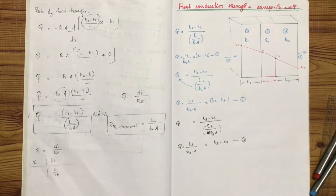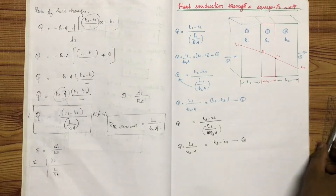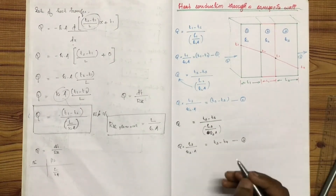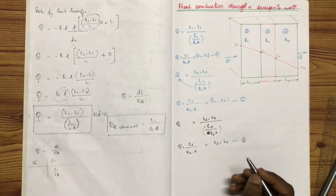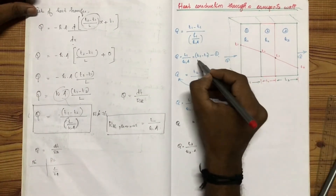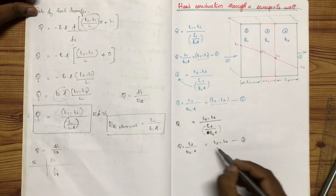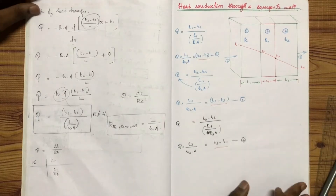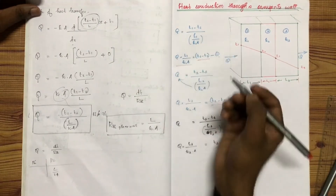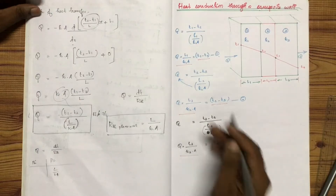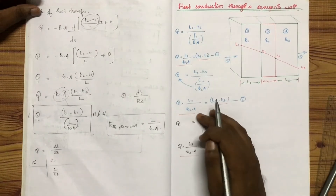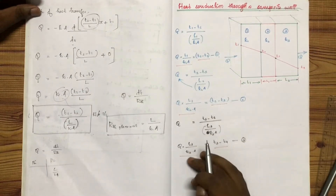We will add equation number 1, equation number 2, and equation number 3. On the right-hand side: T1 minus T2 plus T2 minus T3 plus T3 minus T4. On the left-hand side: Q into the bracket L1 by K1A plus L2 by K2A plus L3 by K3A.